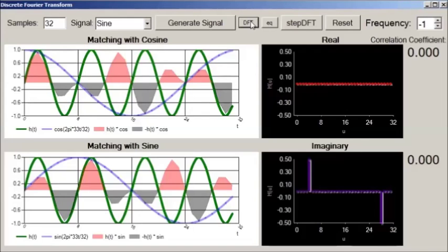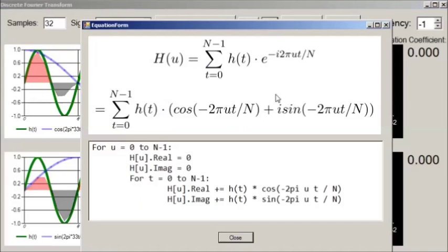The discrete Fourier transform algorithm is very simple. Here is a mathematical formulation of it. The transform, big H for each frequency u, is equal to the sum over all time points of the product of the time domain signal, little h of t, with the complex harmonic function of frequency u.